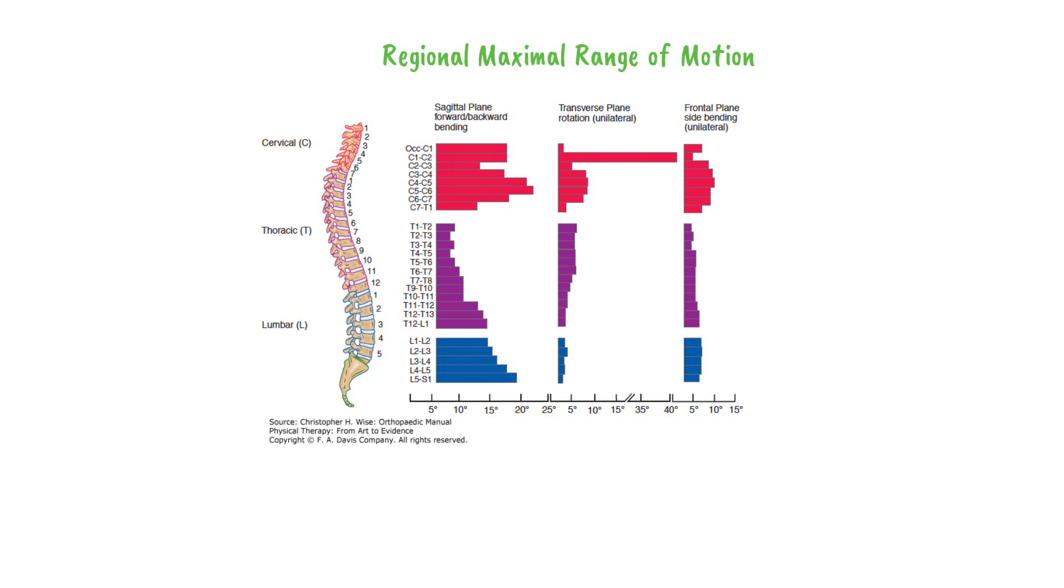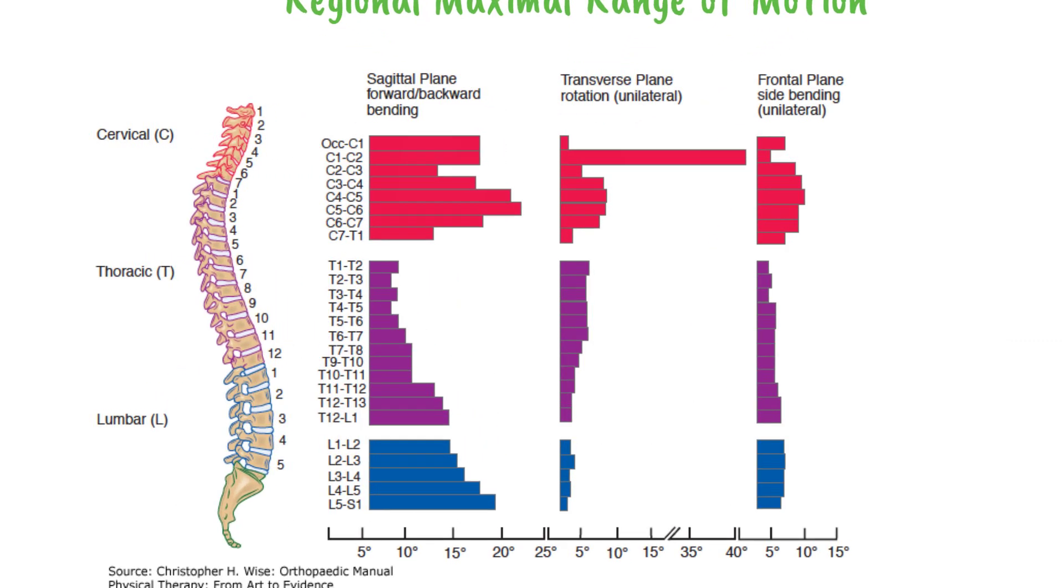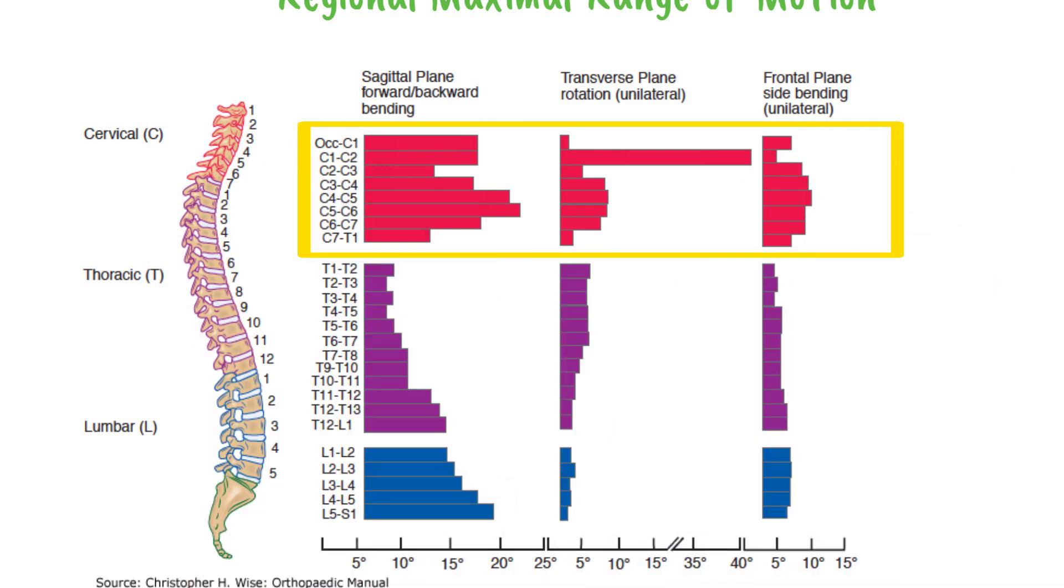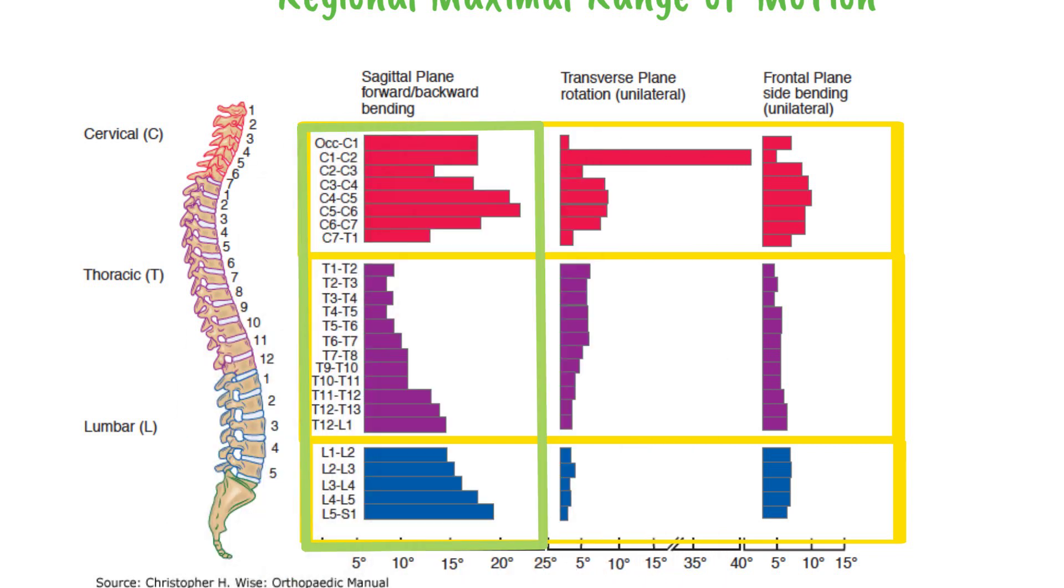This chart gives us a great deal of information about spinal mobility. It is divided into 3 rows, which mark the 3 regions of the spine: cervical, thoracic and lumbar. And 3 columns, which mark the movement at the regions: flexion, extension, rotation and side bending.